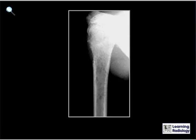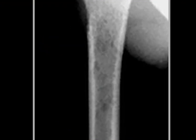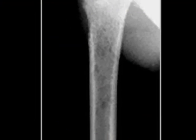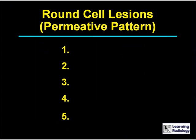Here's the next differential diagnosis. The differential diagnosis is round cell lesions that produce a permeative pattern. There are five major causes.